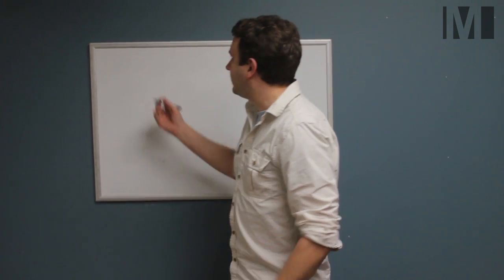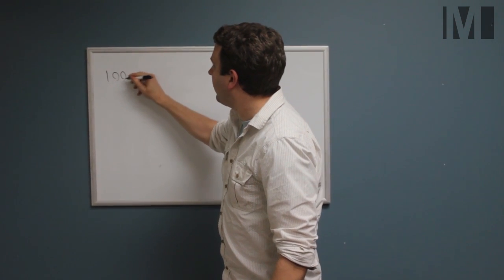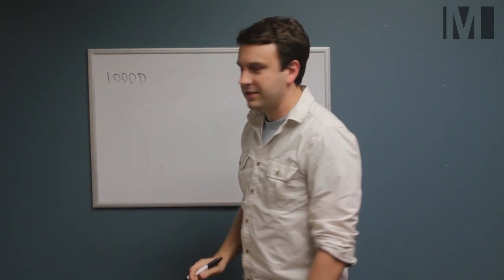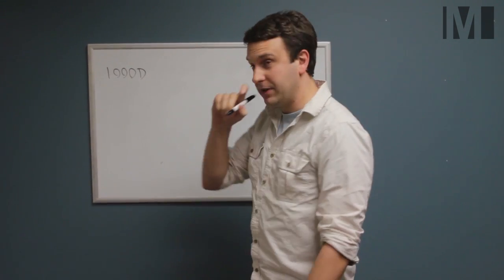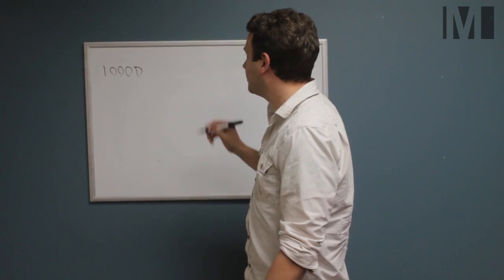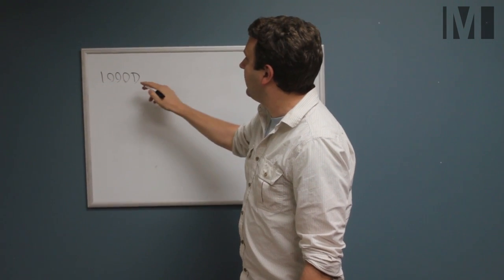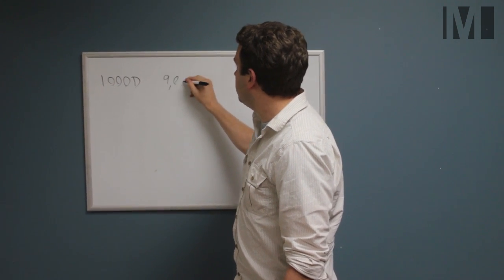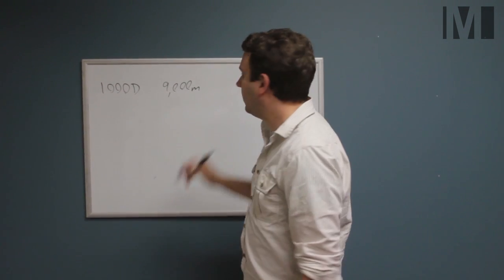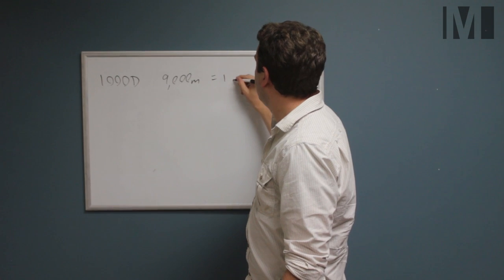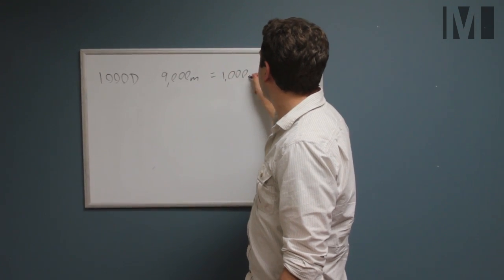Okay, so the example that we use so much in this industry being 1000D. If you have 1000D fabric, that means the magic number here is 9,000 meters. I don't know why it's 9,000 meters, but it just is. So 1000D means that 9,000 meters of the yarn that makes up the fabric weighs 1000 grams.